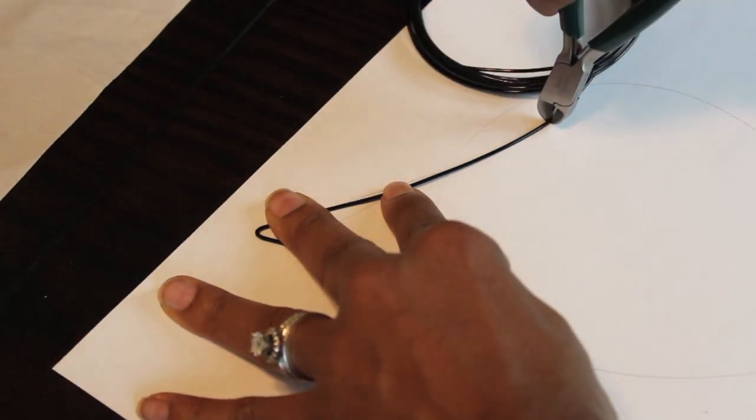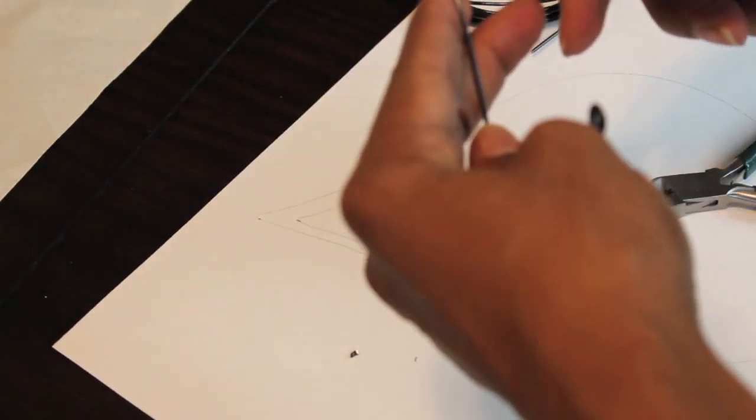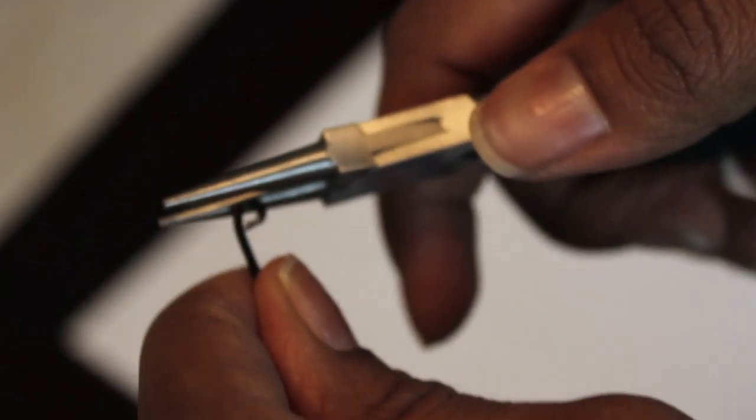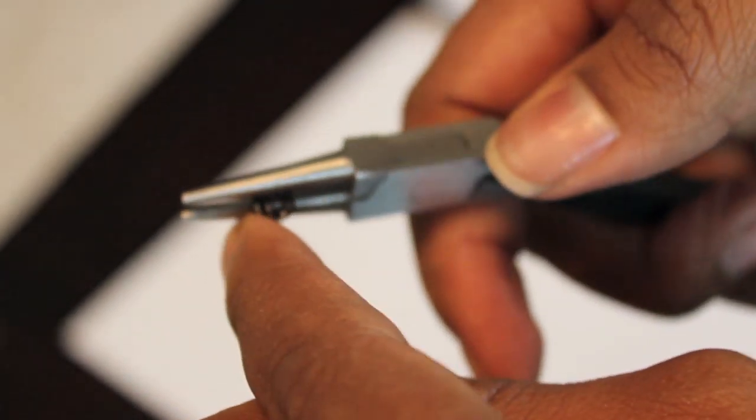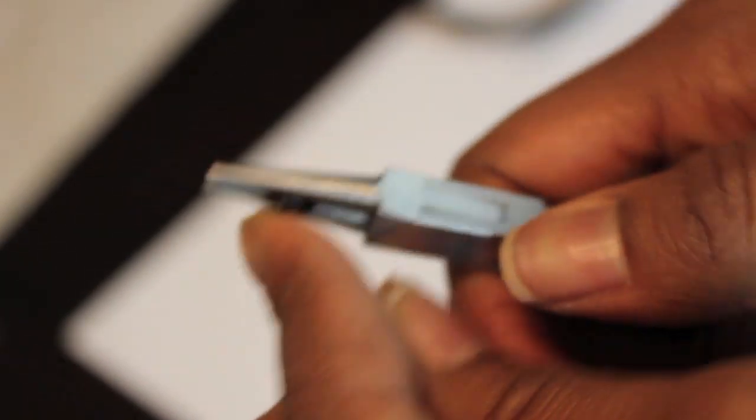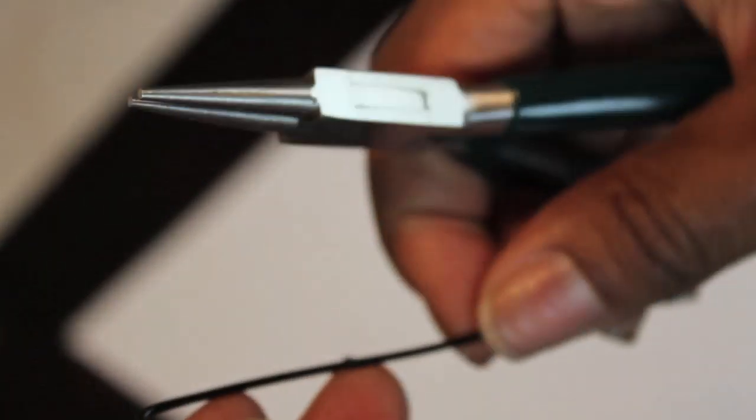Cut off some excess wire and twist. You're going to want to repeat this on the second ear.